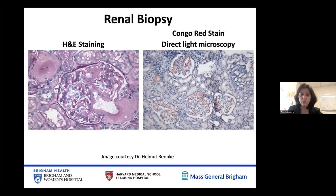This is an image of a glomerulus — the unit structure of the kidney — as well as an arteriole, a small vessel also present in the kidney, where again you see all this pink material accumulating around the normal kidney structure. If we were to perform a Congo red stain on this biopsy, we would see a lot of red stain highlighting the presence of amyloid when viewed under polarized light.